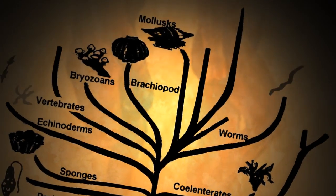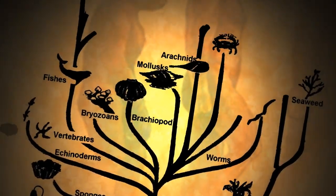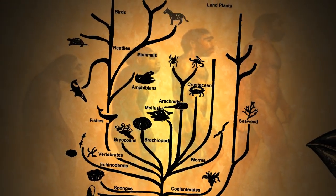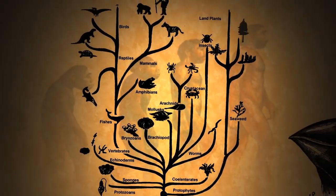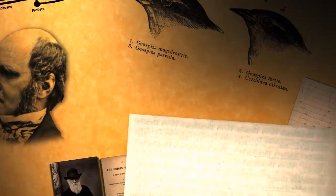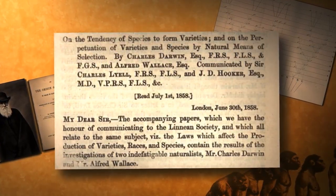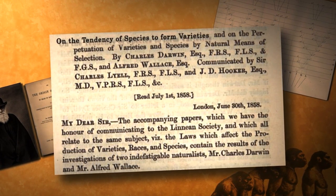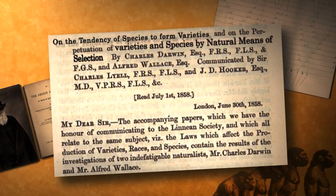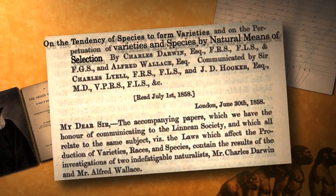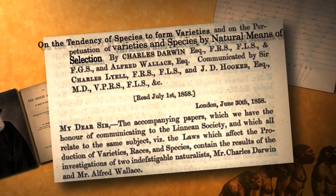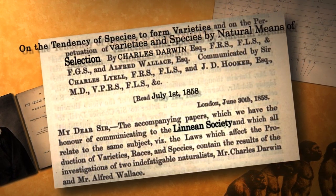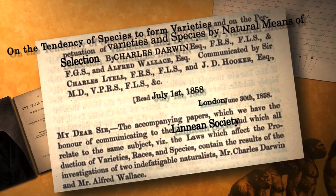On July 1st, 1858, a revelation was made which encompassed all fields of science, religion and social thinking. On this day, a paper called 'On the Tendency of Species to Form Varieties and On the Perpetuation of Varieties and Species by Natural Means of Selection' was presented to the Linnaean Society of London.